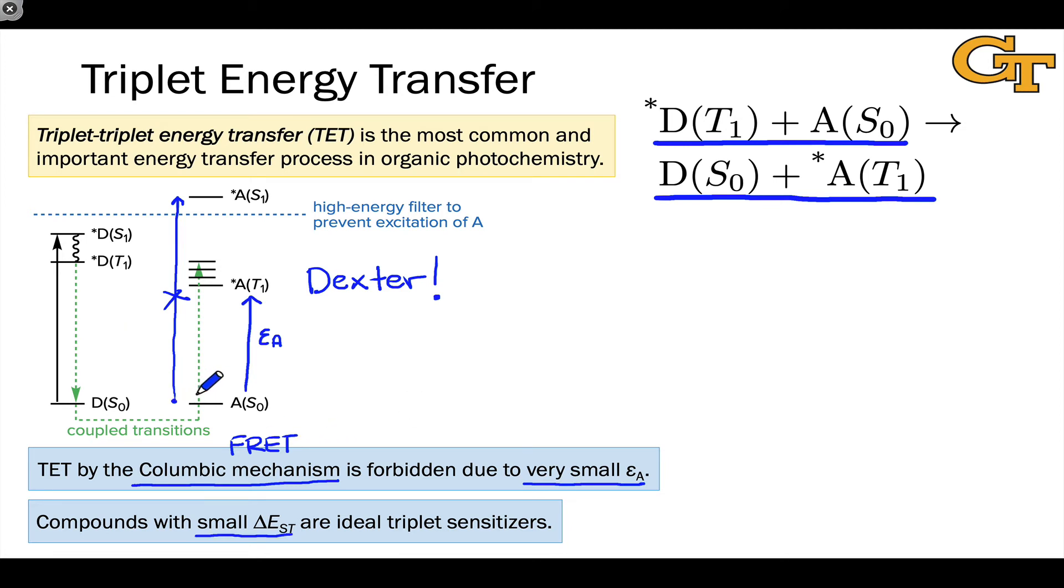This ensures rapid intersystem crossing, encourages a high quantum yield for intersystem crossing, so that D star, when it's around in solution, is predominantly in its T1 state at any given time.